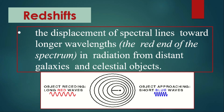Now let's talk about redshift. Redshift is the displacement of spectral lines toward longer wavelengths — the red end of the spectrum — in radiation from distant galaxies and celestial objects. Redshift is one of the pieces of evidence that proves the Big Bang Theory. When an object is receding, long red waves are observed.